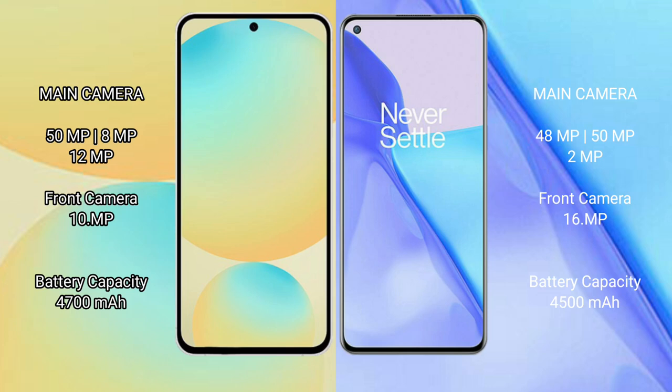Samsung Galaxy S24 FE features a rear triple camera setup: 50MP plus 8MP plus 12MP, and a 10MP front camera. OnePlus 9 features a rear triple camera setup: 48MP plus 15MP plus 2MP, and a 16MP front camera.